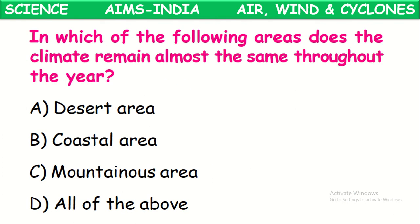In which areas does the climate remain almost the same throughout the year? The answer is coastal areas. In coastal areas the climate will be almost the same throughout the year. Coastal areas are the places nearby the oceans and seas.